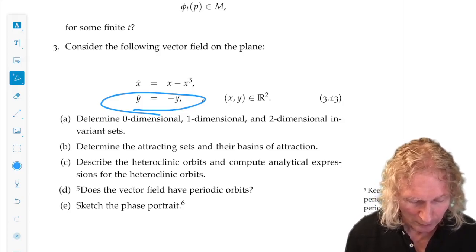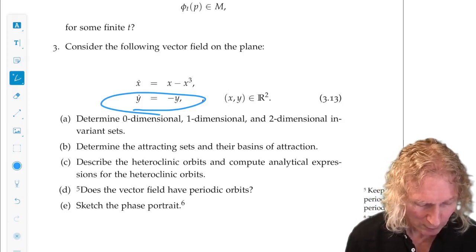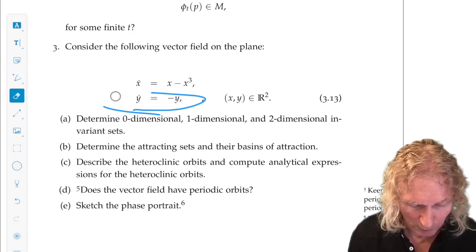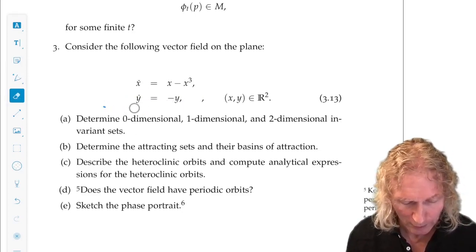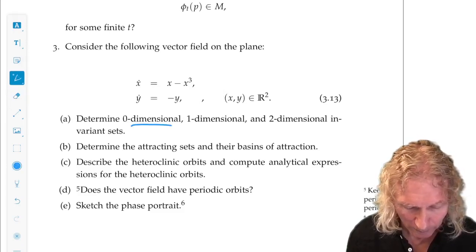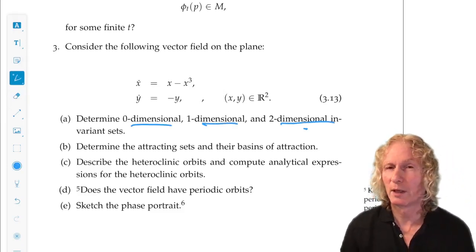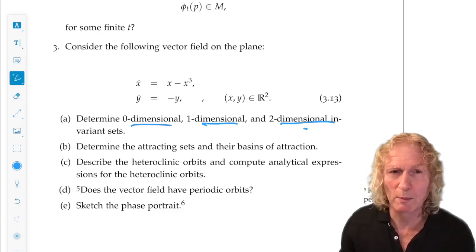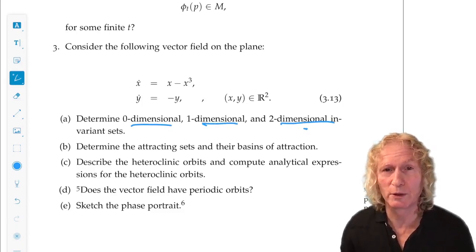Now, I realize that there's one thing I have not mentioned that should maybe be intuitively clear, but it's good to clear it up at this stage. The notion of dimensionality. Dimension of the phase space, yes. But what do I mean by zero-dimensional, one-dimensional, two-dimensional?